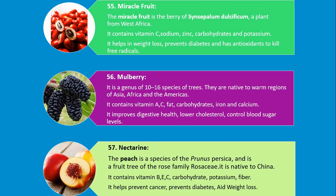Number 57. Nectarine. The peach is a species of Prunus persica and is a fruit tree of the rose family Rosaceae. It is native to China. It contains vitamin B, E, C, carbohydrate, potassium and fiber. It helps prevent cancer, prevents diabetes, and aids weight loss.